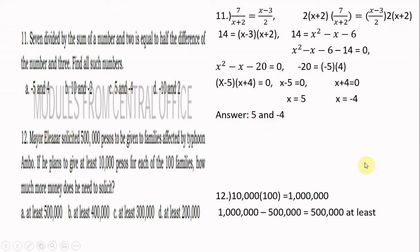Number twelve: Mary Eliazar solicited 500,000 pesos to give to families affected by Typhoon Ambo. She plans to give at least 10,000 pesos each to 100 families. Total needed is 10,000 times 100 equals 1,000,000 pesos. Since she has 500,000, she needs to solicit at least 500,000 more pesos.